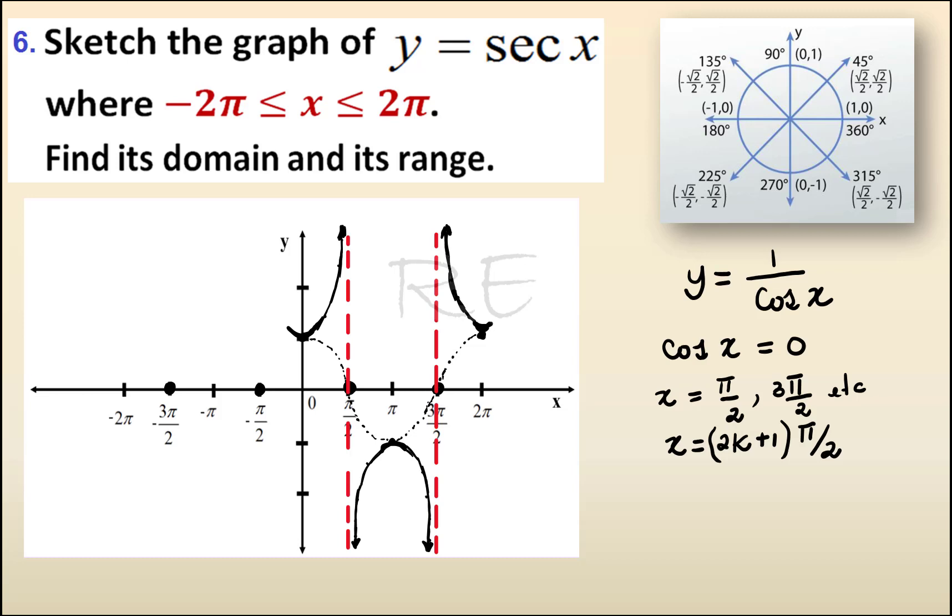The graph of secant is reflexive over the y-axis. Therefore, we can reflect in dotted line the graph of cosine, draw the vertical asymptotes, and just reflect the graph over the y-axis.